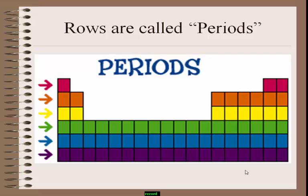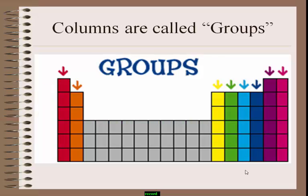There are seven periods: first period, second period, third period, fourth, fifth, sixth, and seventh. The columns which are present in the periodic table are called groups. How many groups are present in the periodic table? There are 18 groups, because the periodic table contains 18 columns filled by the elements.